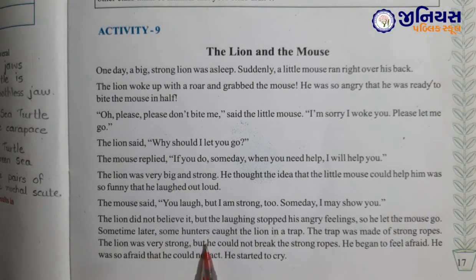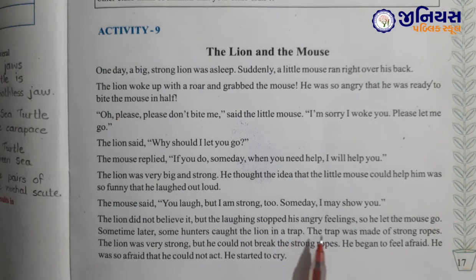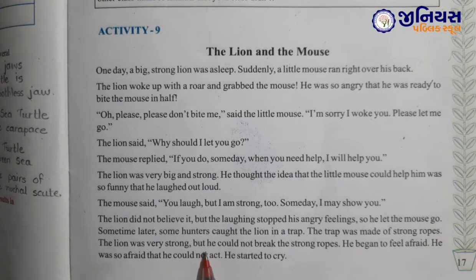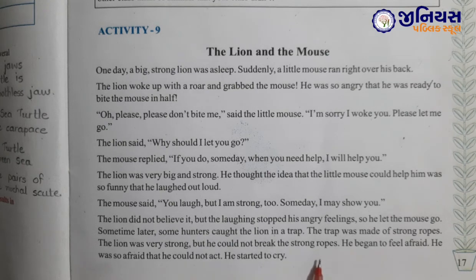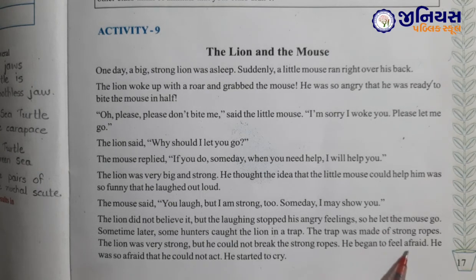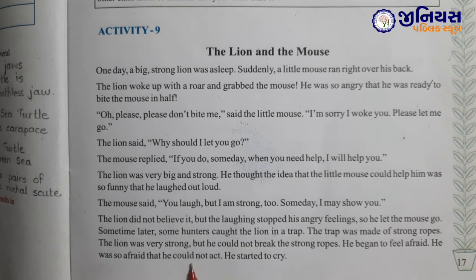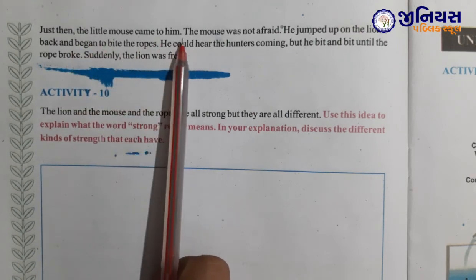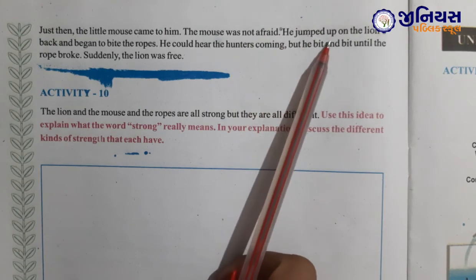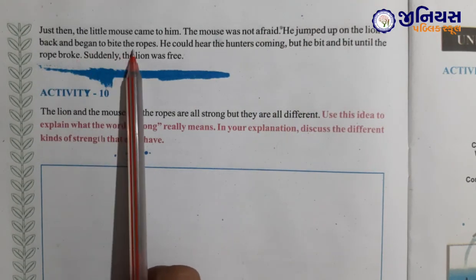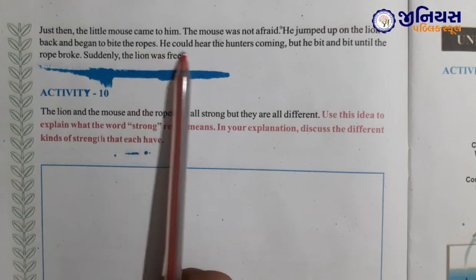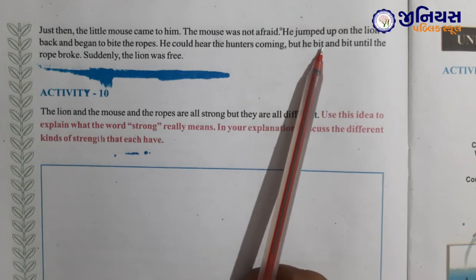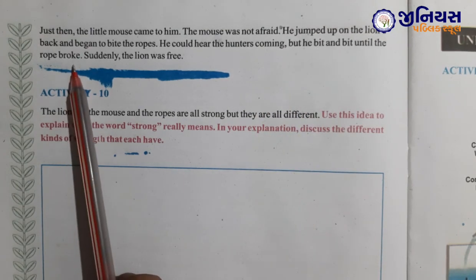Some time later, some hunters caught the lion in a trap. The trap was made of strong ropes. The lion was very strong, but he could not break the strong ropes. He began to feel afraid. He was so afraid that he could not act. He started to cry. Just then the little mouse came to him. The mouse was not afraid. He jumped up on the lion's back and began to bite the ropes. He could hear the hunters coming, but he bit and beat until the rope broke. Suddenly the lion was free.